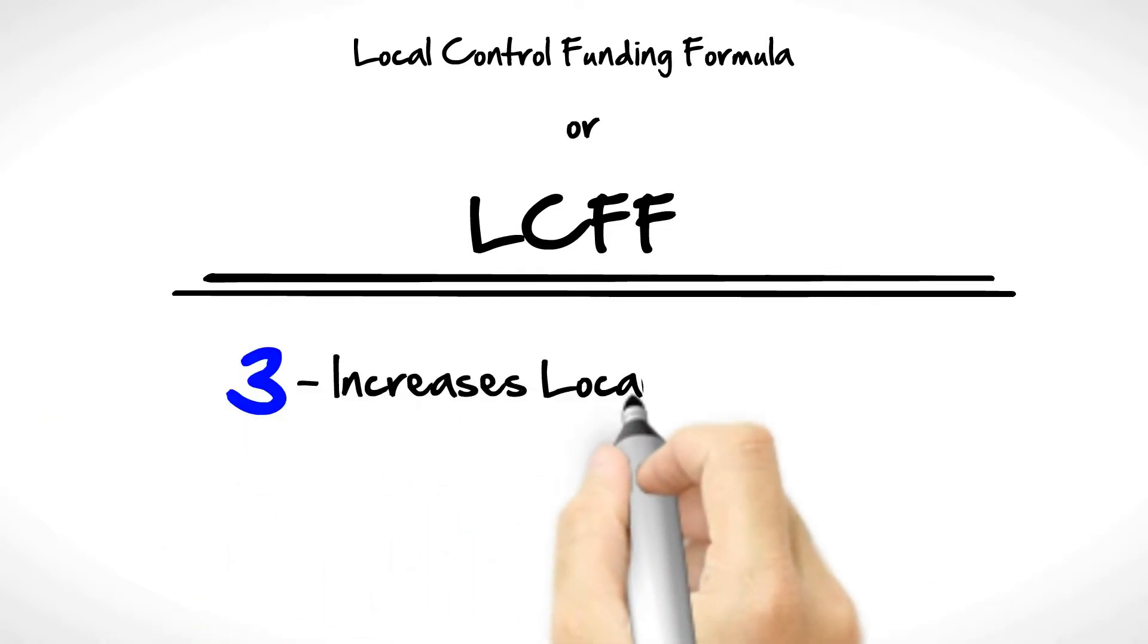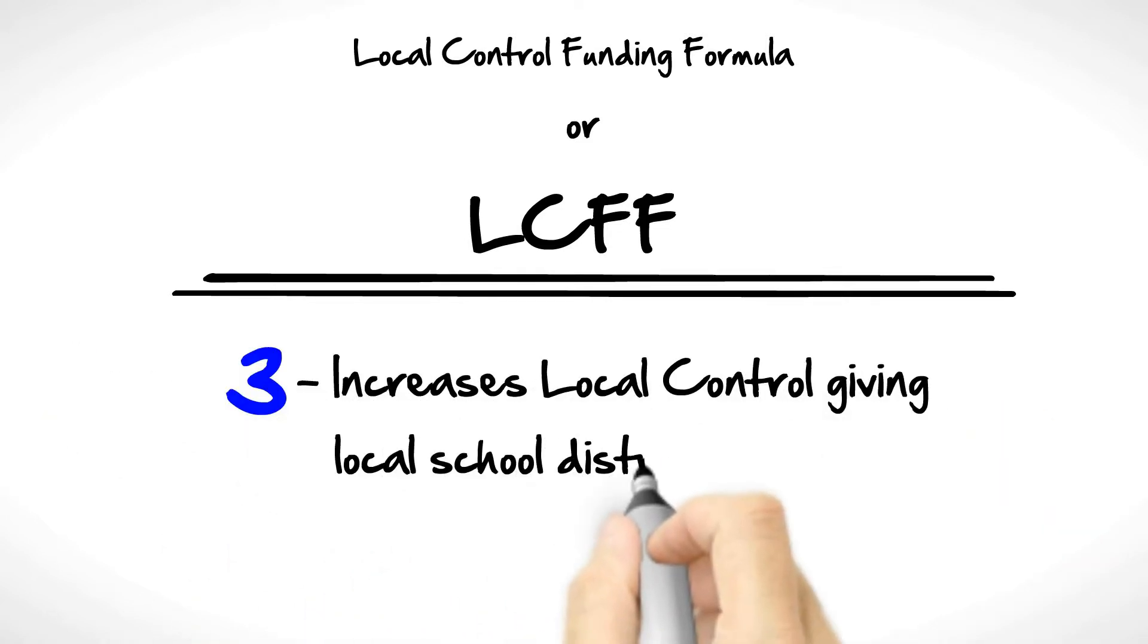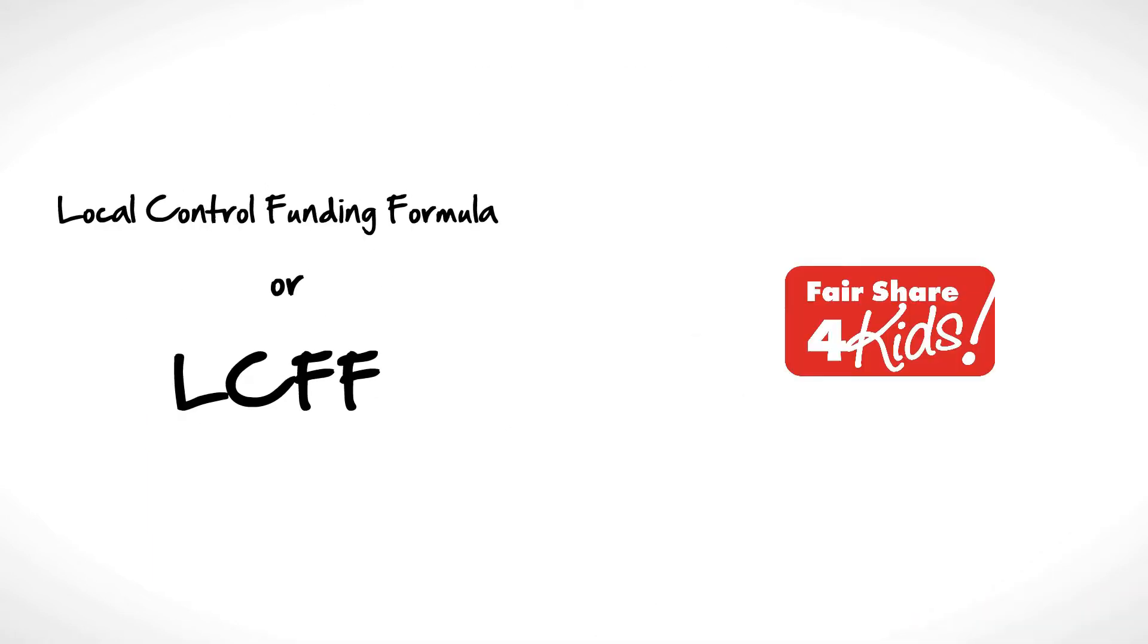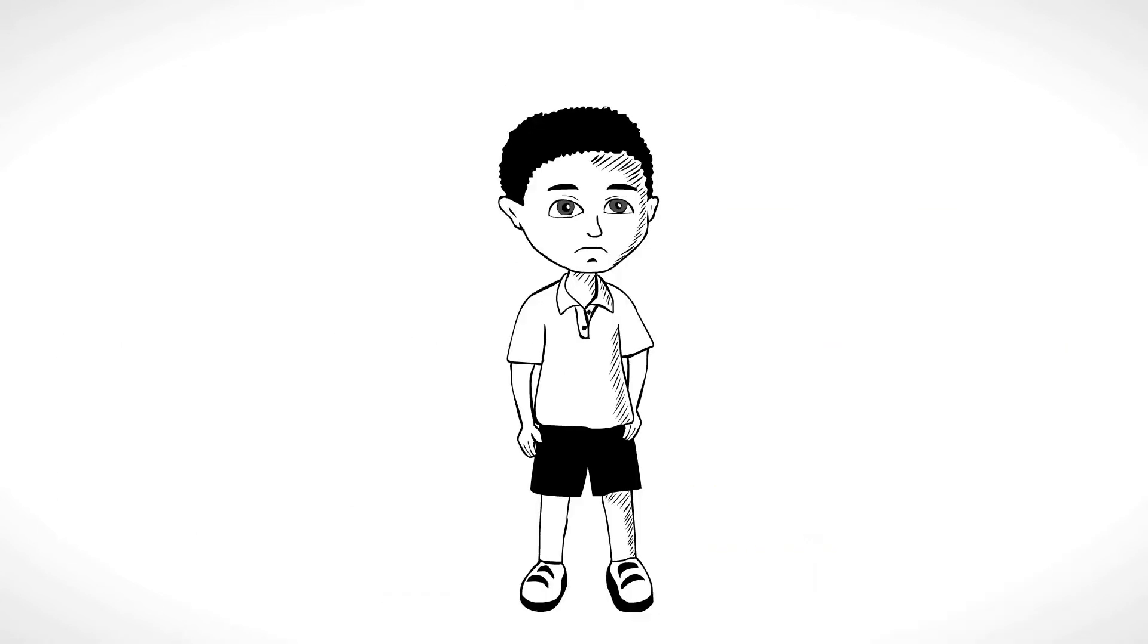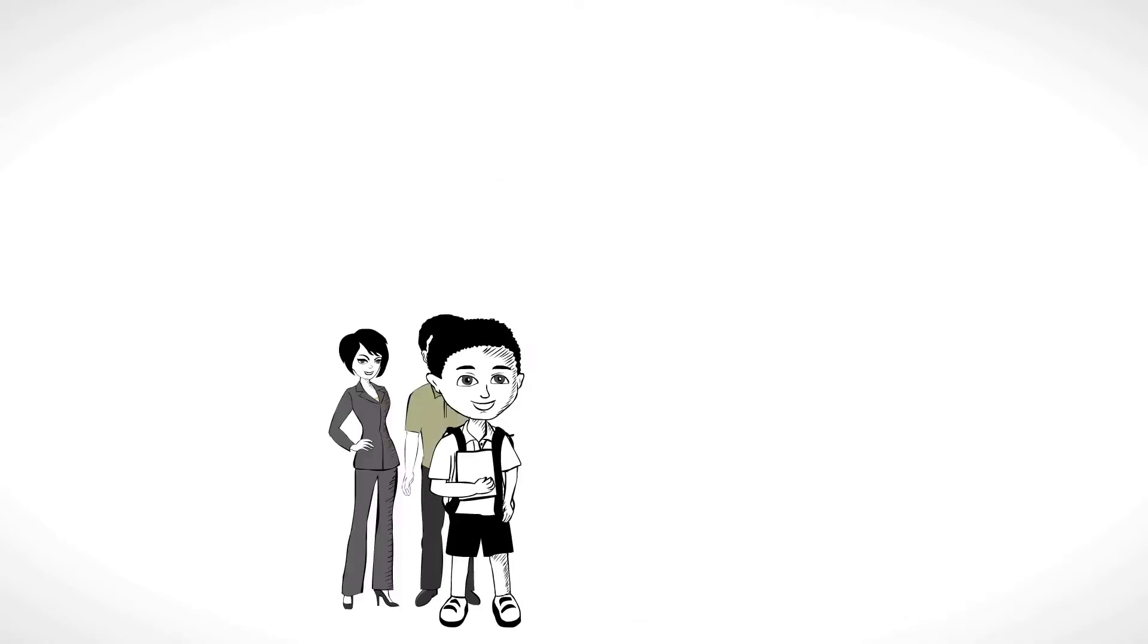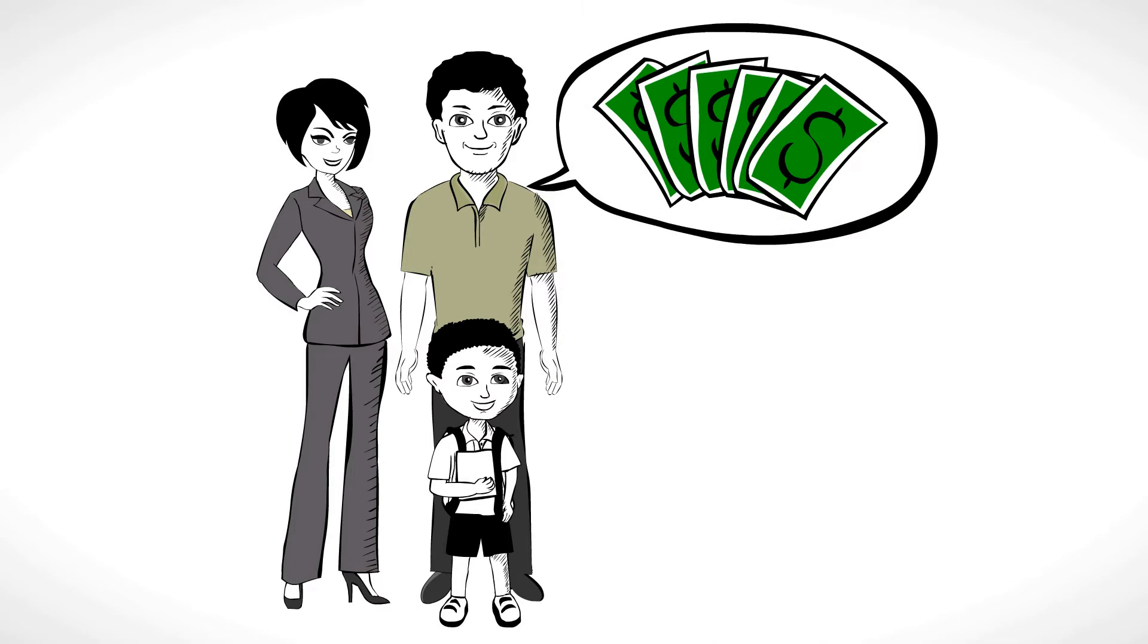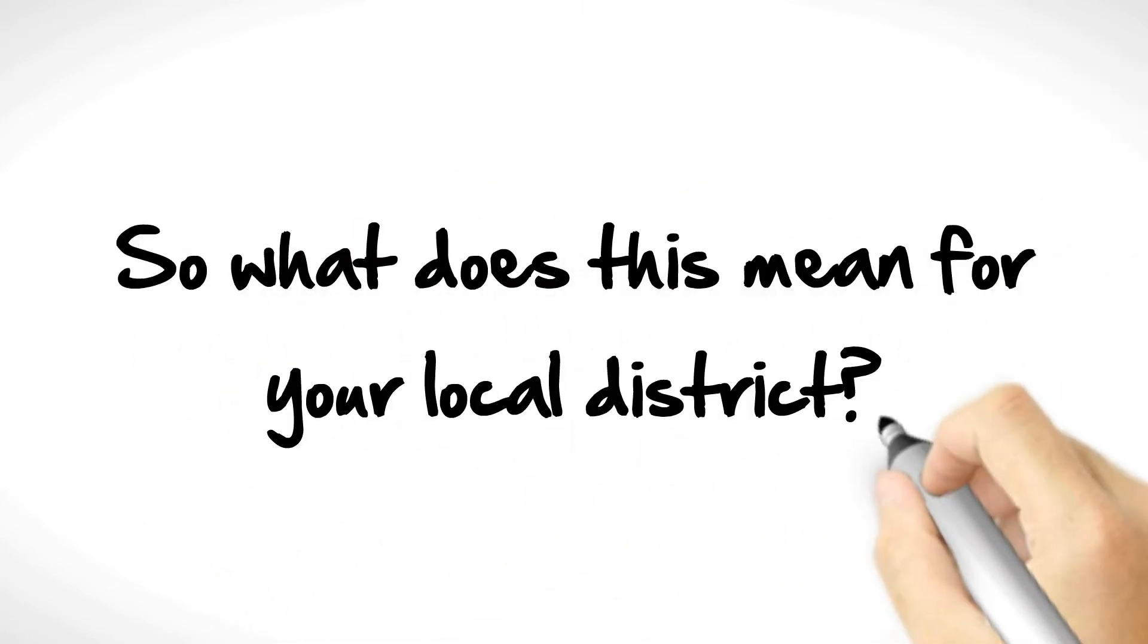Increases local control, giving local school districts more options on how to best use funds. Fair Share for Kids supports this plan as long as low-income students receive the support they need and parents have a voice on how monies are spent. What does this mean for your local district?